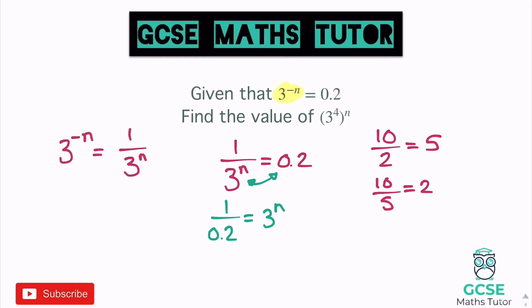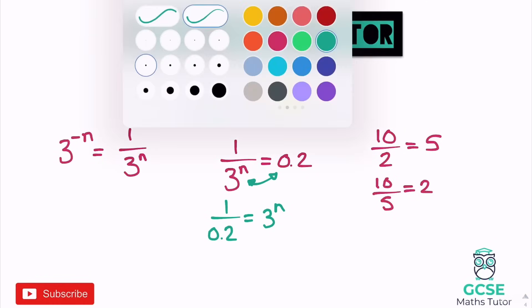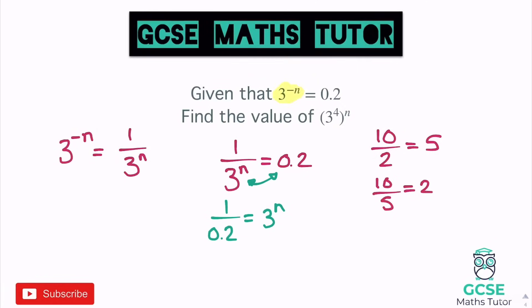1 divided by 0.2: 0.2 fits into 1 five times (0.2, 0.4, 0.6, 0.8, 1.0). So 3 to the power of n equals 5. That's quite an important piece of information — we now have an actual number to work with.